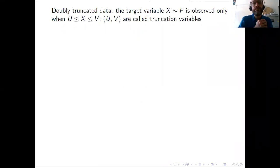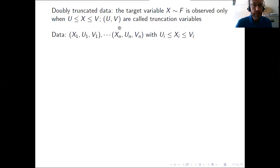So with doubly truncated data, the target variable X with cumulative distribution function F is observed only when it falls within two random limits U and V, and these couple U, V are called the truncation variables, and one is able to observe the values of U and V too. So at the end we have n triplets X1, U1, V1 through Xn, Un, Vn, but subject to this condition here.